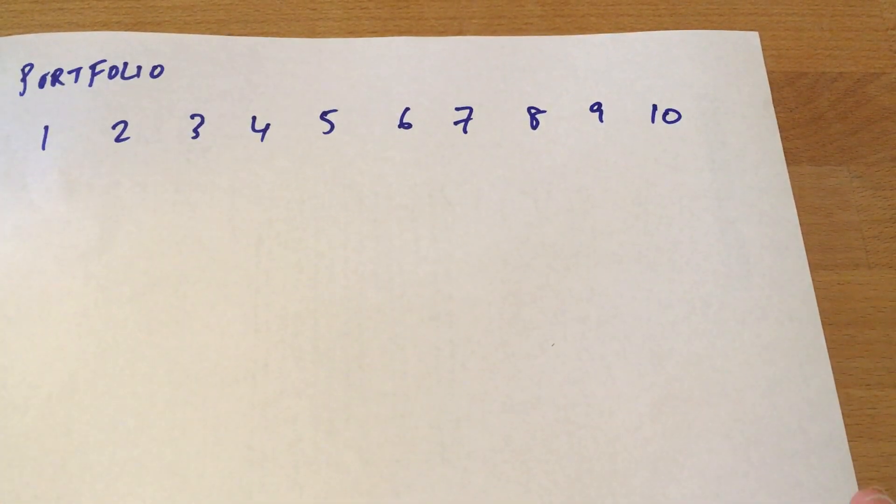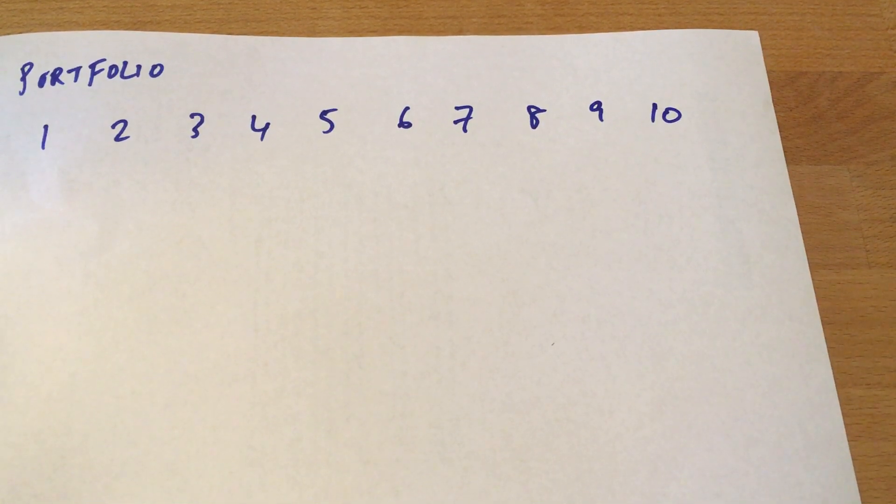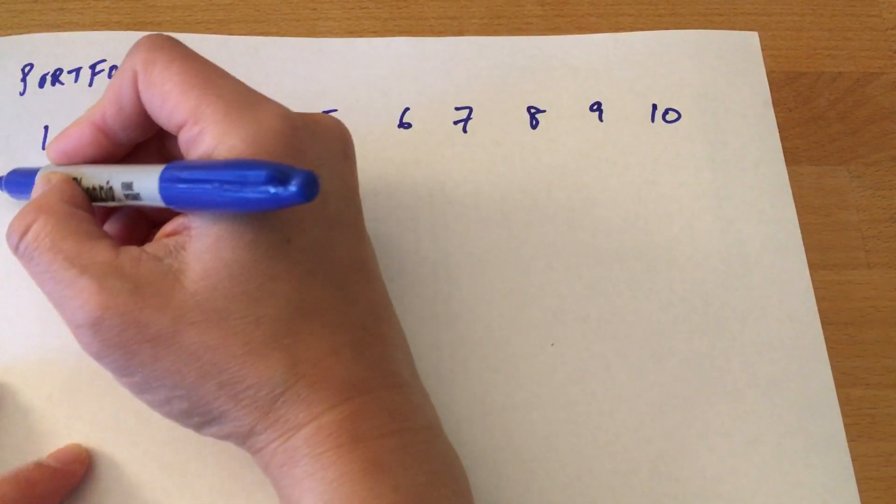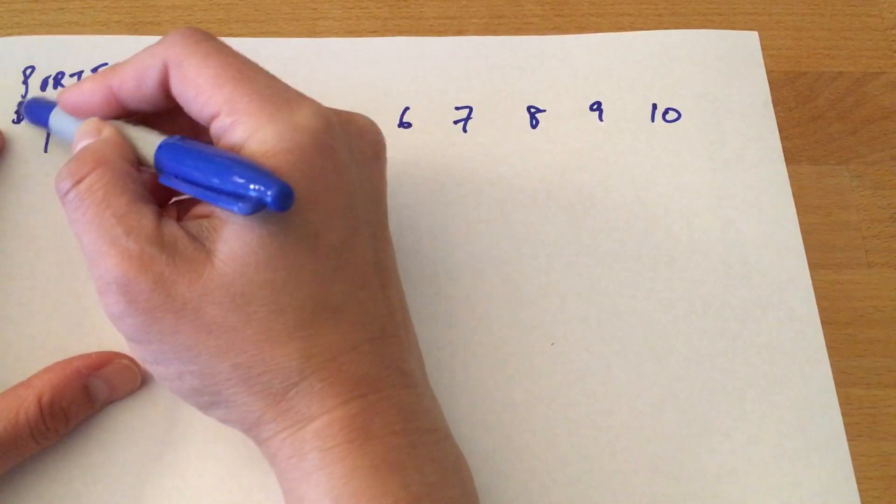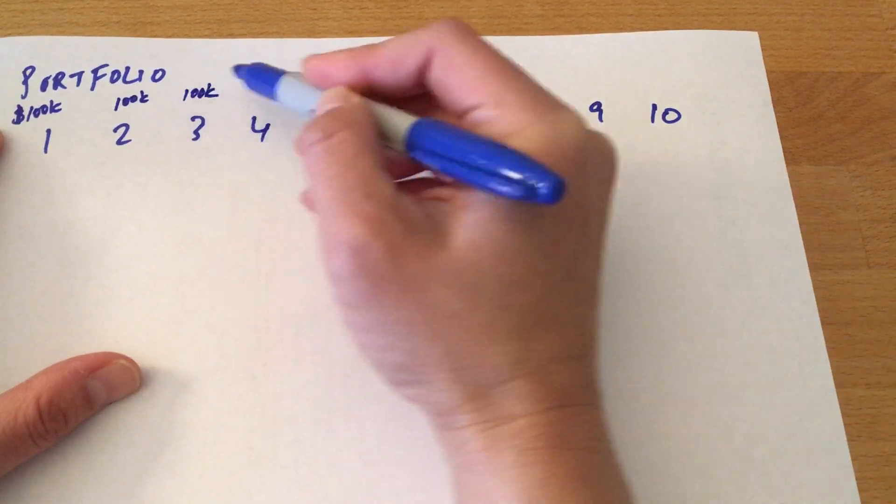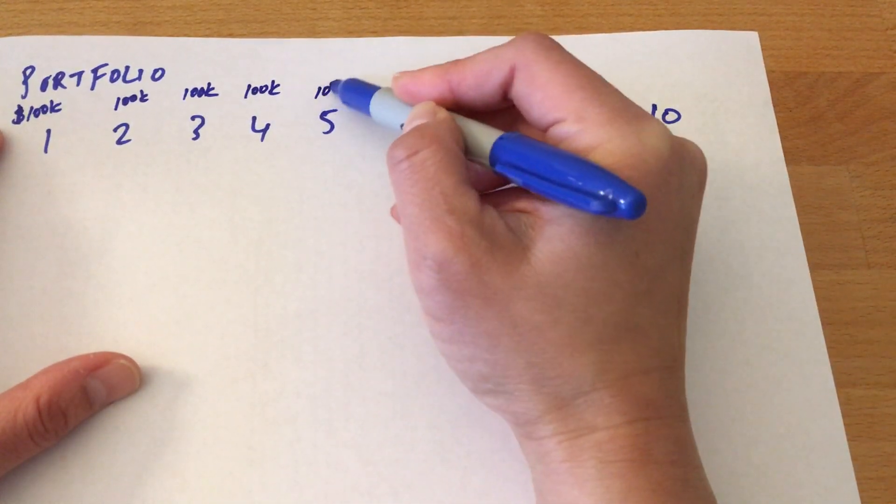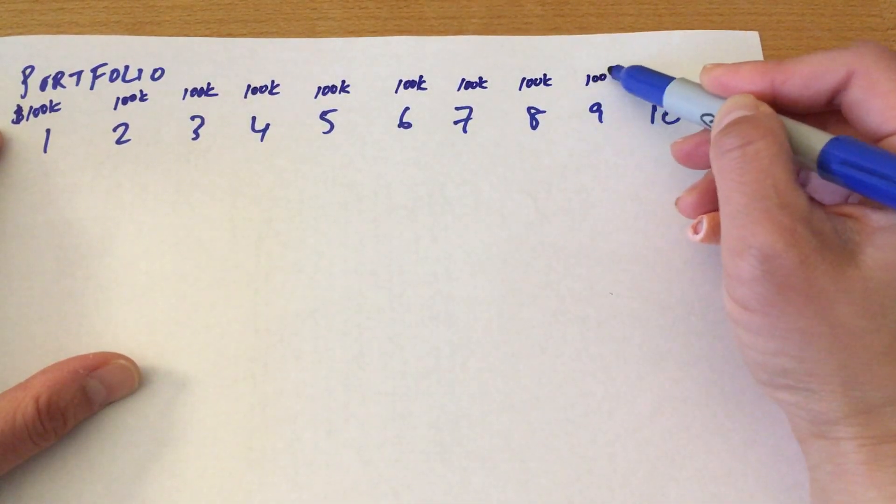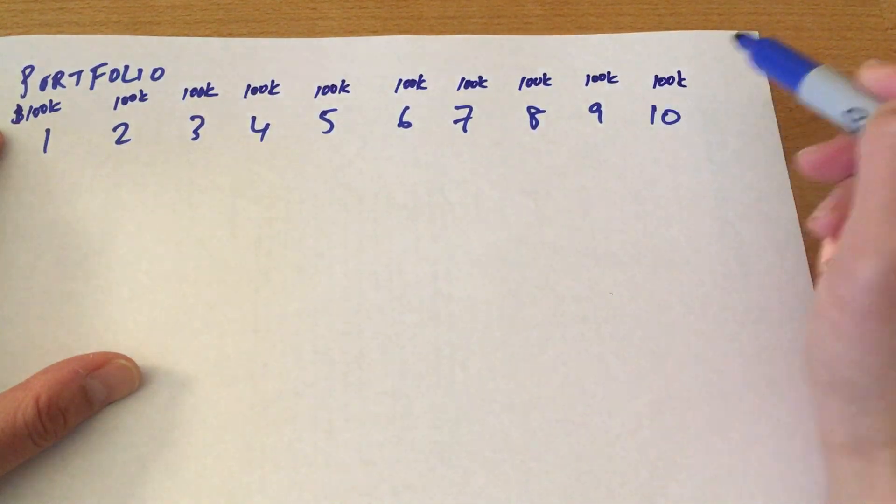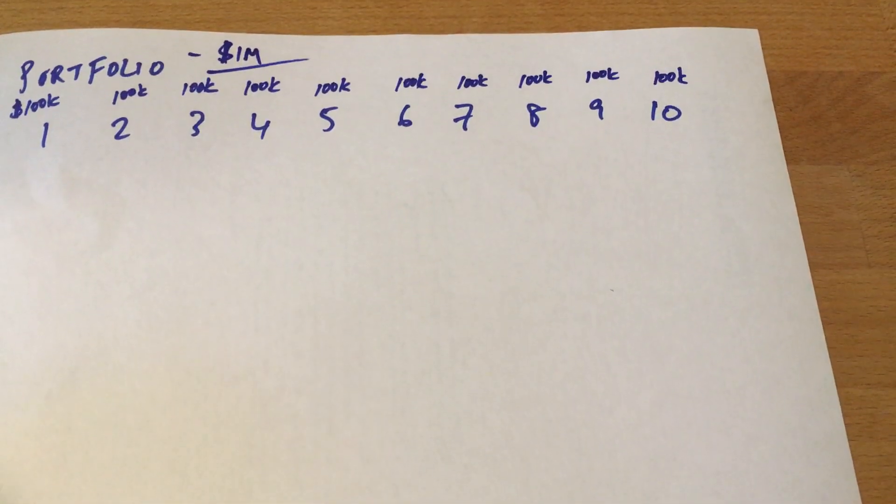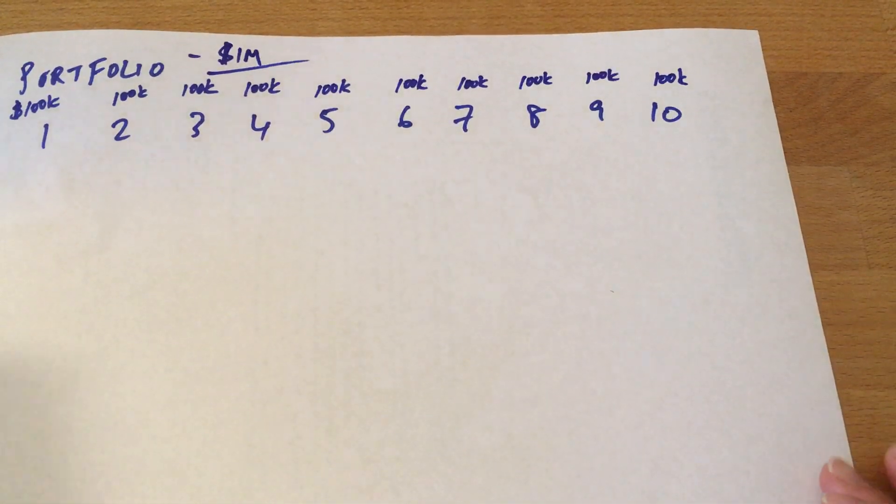The old adage says that nine out of ten early stage companies fail. In this scenario, we put in $100,000 into each company equally, so we've allocated a total of $1 million—that's our fund. We put 100K into each one, and nine out of ten fail.